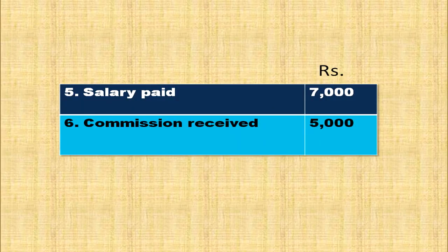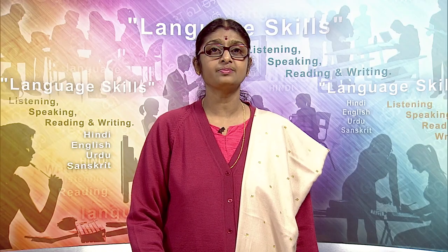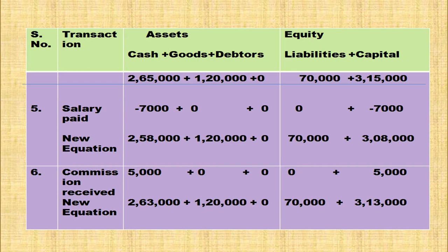Salary paid rupees 7,000 and commission received rupees 5,000. When salary is paid, deduct 7,000 from cash column and deduct 7,000 from capital column. Commission received — cash increases plus 5,000, capital increases plus 5,000. New equation: cash 2,63,000 + goods 1,20,000 = 3,83,000 on asset side; liabilities 70,000 + capital 3,13,000 = 3,83,000. Accounting equation is satisfied.